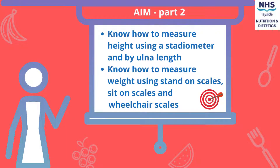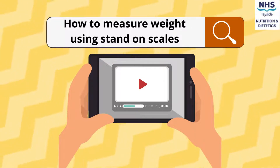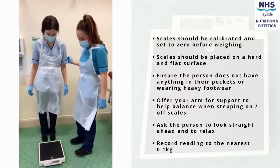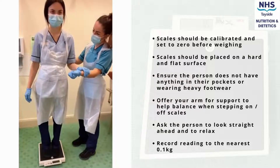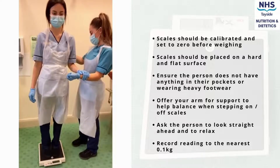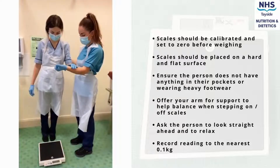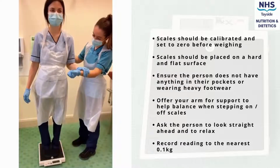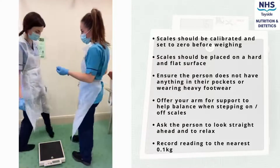The aim of part 2 is to know how to measure height using a stadiometer and ulna length, and also how to measure weight using stand-on scales, sit-on scales, and wheelchair scales. All scales should be calibrated in line with local policy and placed on a hard, flat surface free of hazards. Before weighing the person, ensure they have nothing in their pockets and note any heavy clothing. Ask the person to step onto the stand-on scales, offering arm support if needed, and once balanced, record the reading to the nearest 0.1 kg.